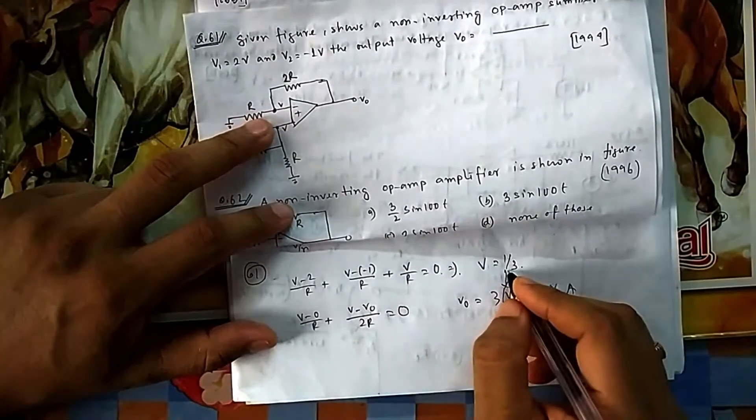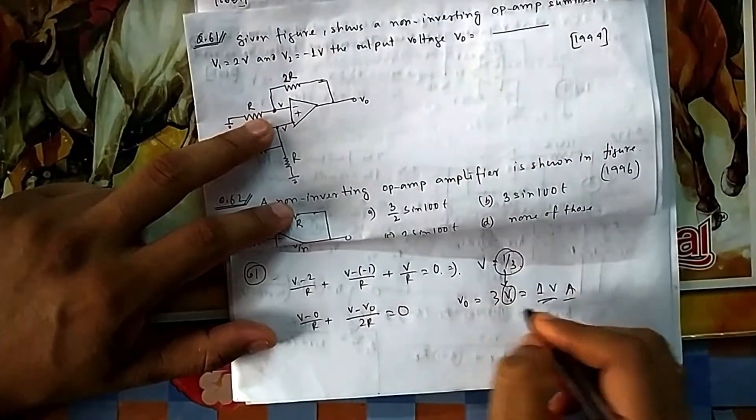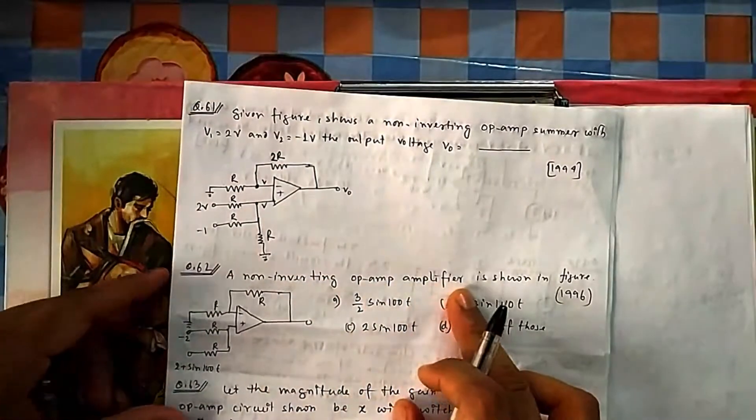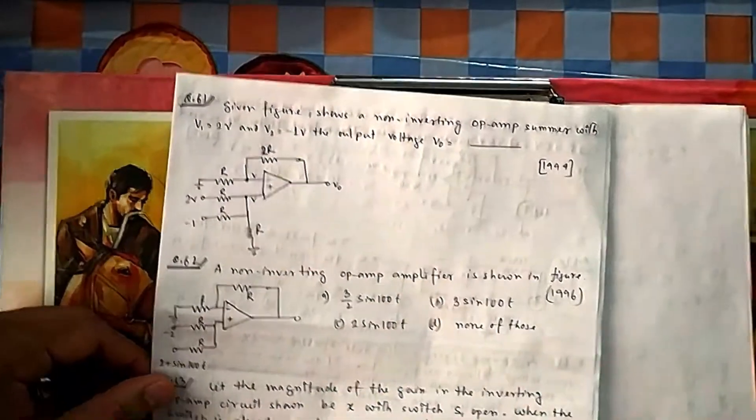Now taking nodal at V−: (V − 0)/R + (V − V0)/2R = 0. Solving, V0 = 3V. Since V = 1/3, V0 = 1 volt.